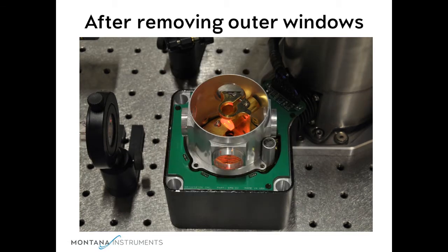If we remove the outer window assembly and inner cap, we see the sample mount. You can now see the inner radiation shield better with its windows. The windows unscrew easily and can be replaced with ones with special coatings or other functions.